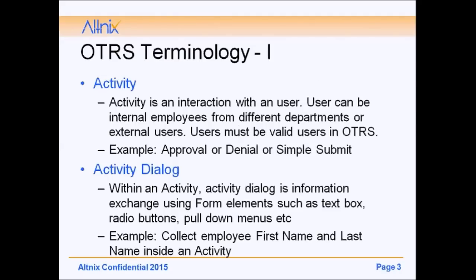The terminology used is as follows. First of all, there is Activity. Activity is an interaction with a user — the user can be an internal employee from different departments or external users. Users must be valid users in OTRS. An example could be an approval, denial, or a simple submit option for an Activity.